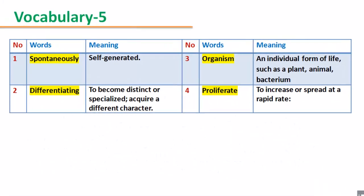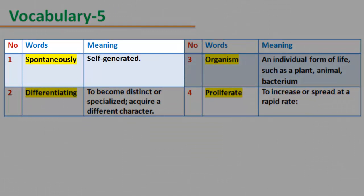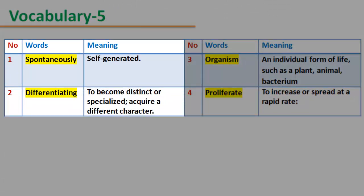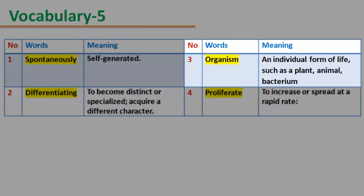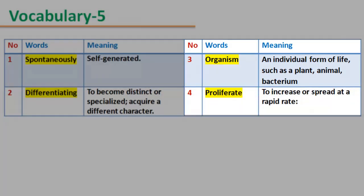Vocabulary 5. Number 1 — Spontaneously: self-generated. Number 2 — Differentiating: to become distinct or specialized; acquire a different character. Number 3 — Organism: an individual form of life, such as a plant, animal, or bacterium. Number 4 — Proliferate: to increase or spread at a rapid rate.